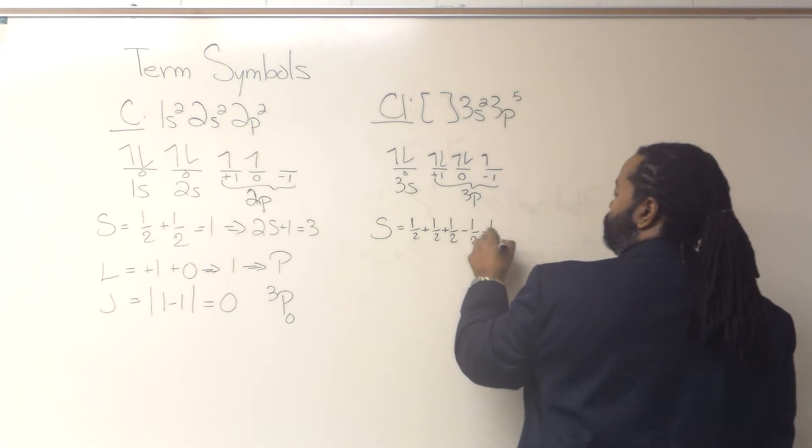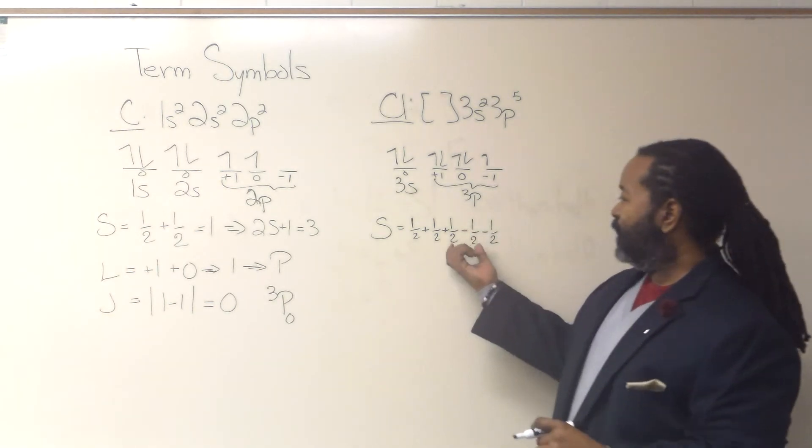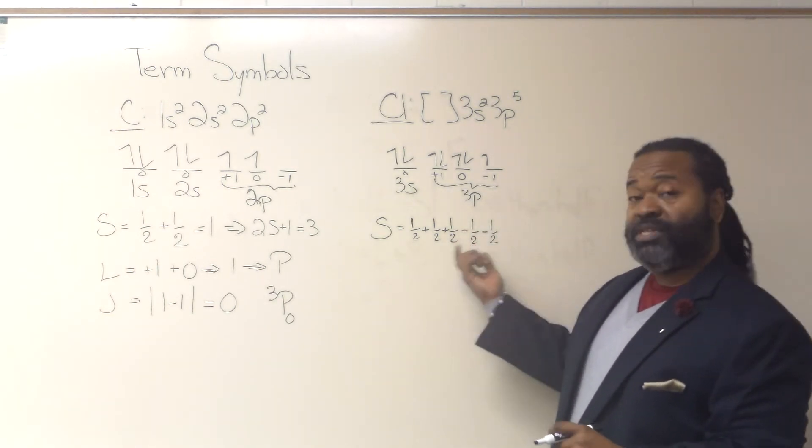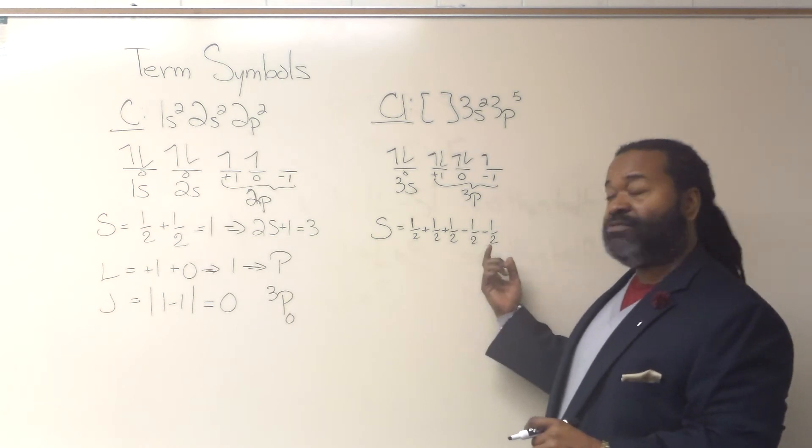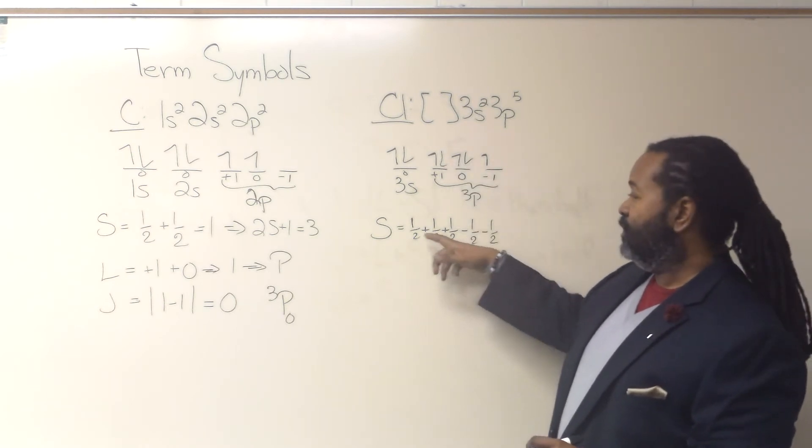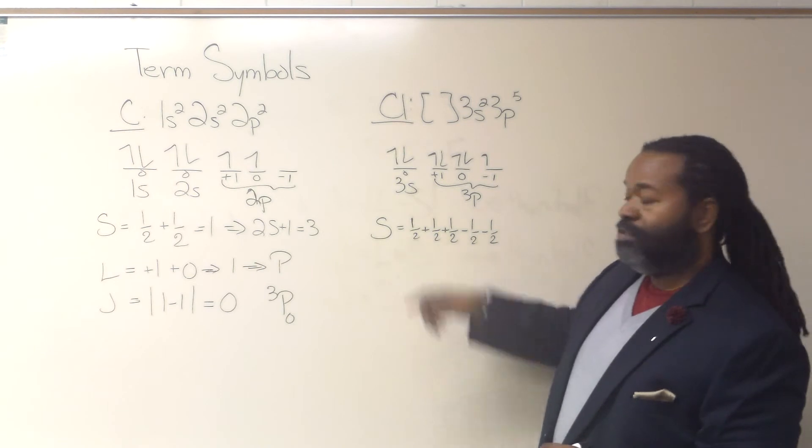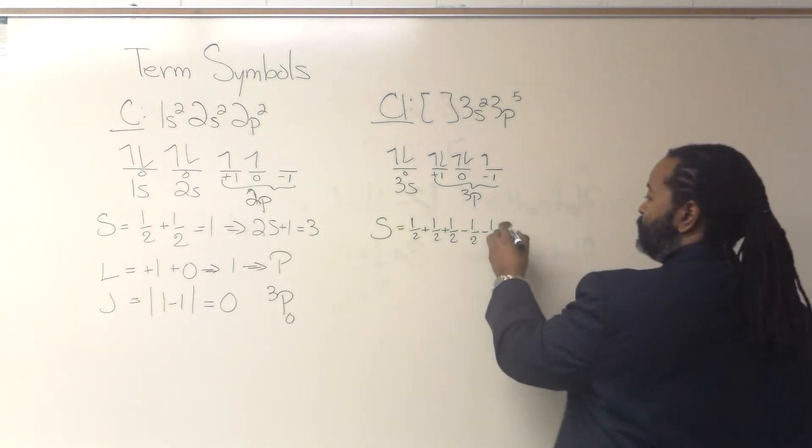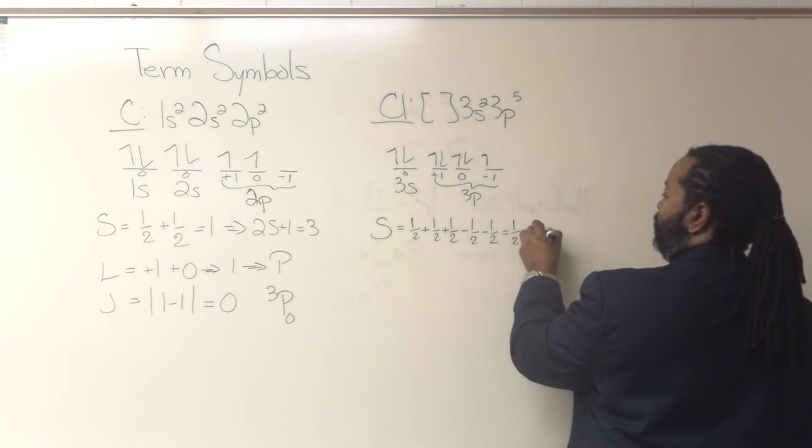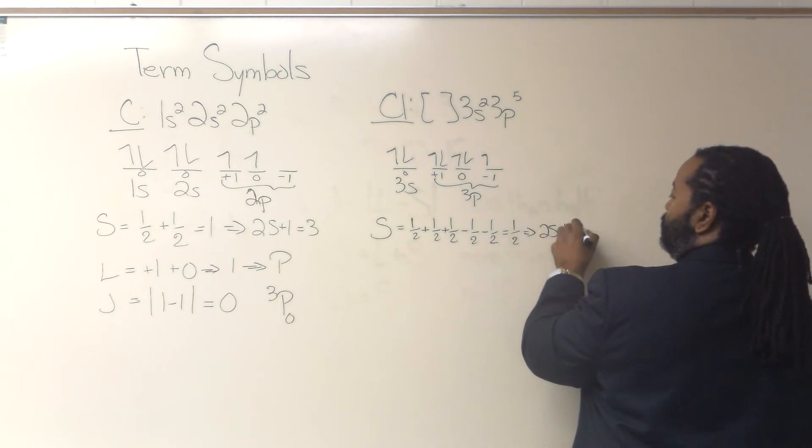1, 2 spin-downs. And you'll note that these two plus-a-halves cancel these two minus-a-halves. So we end up really only needing to have worried about the one unpaired. So that means that s equals 1 half. And 2s plus 1 is going to be 2.